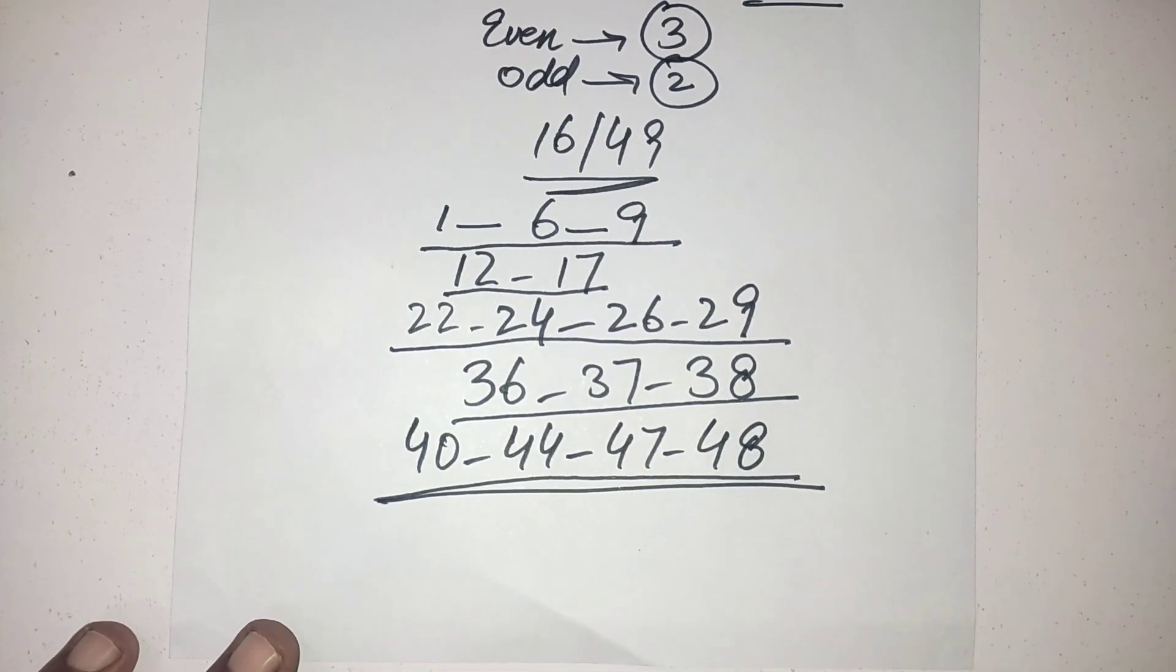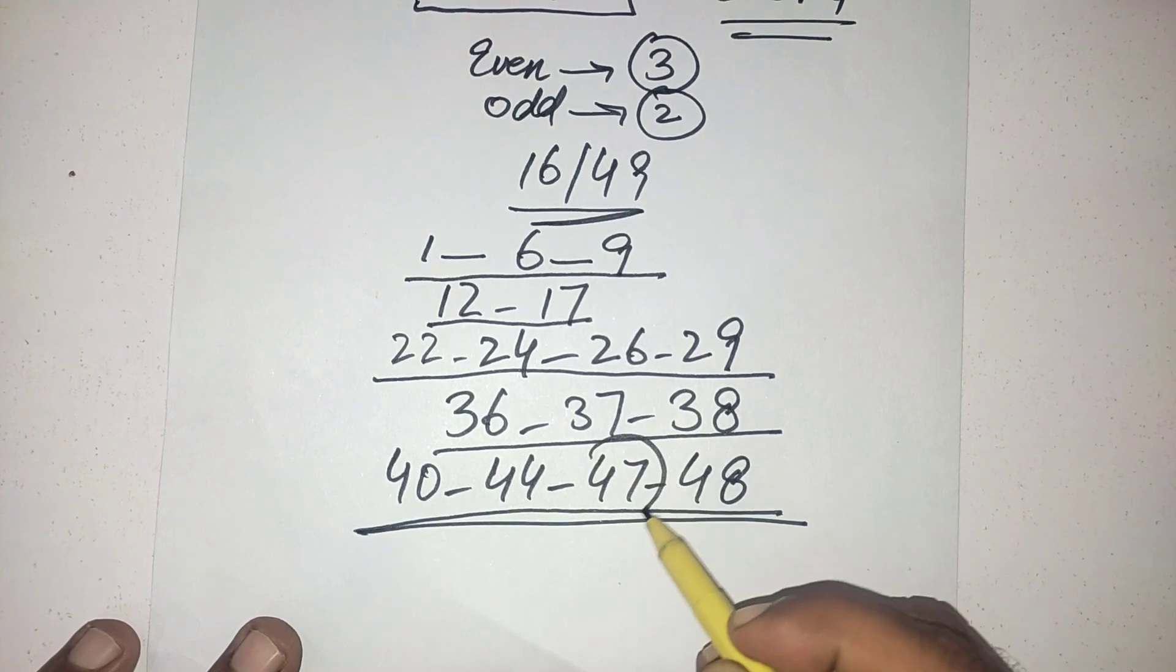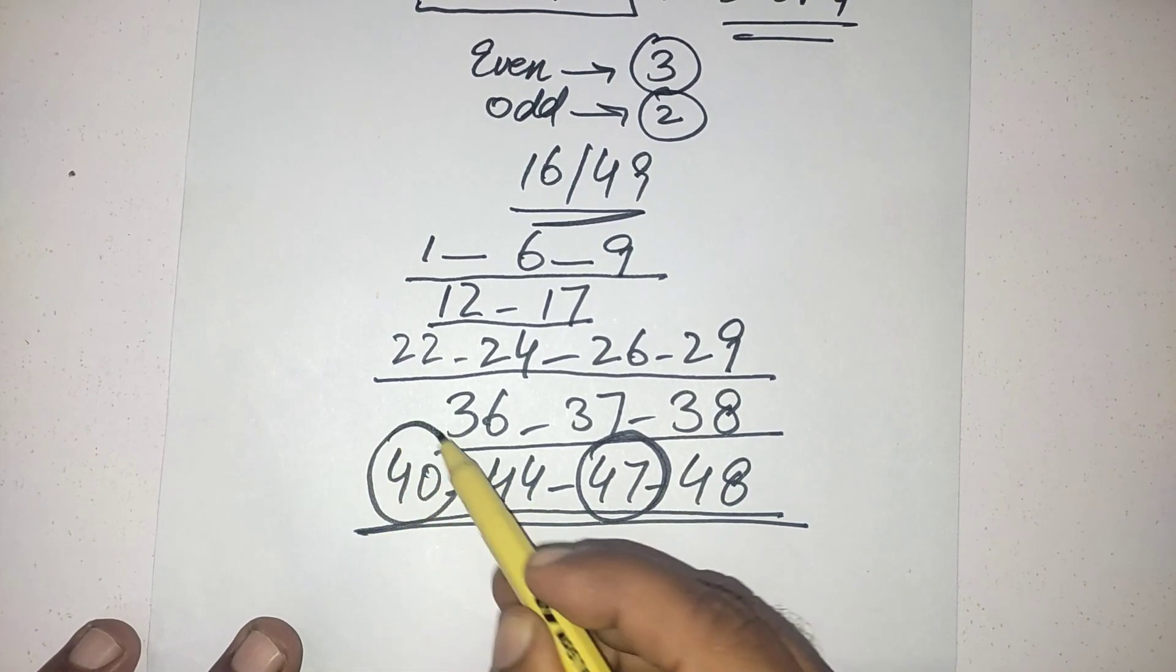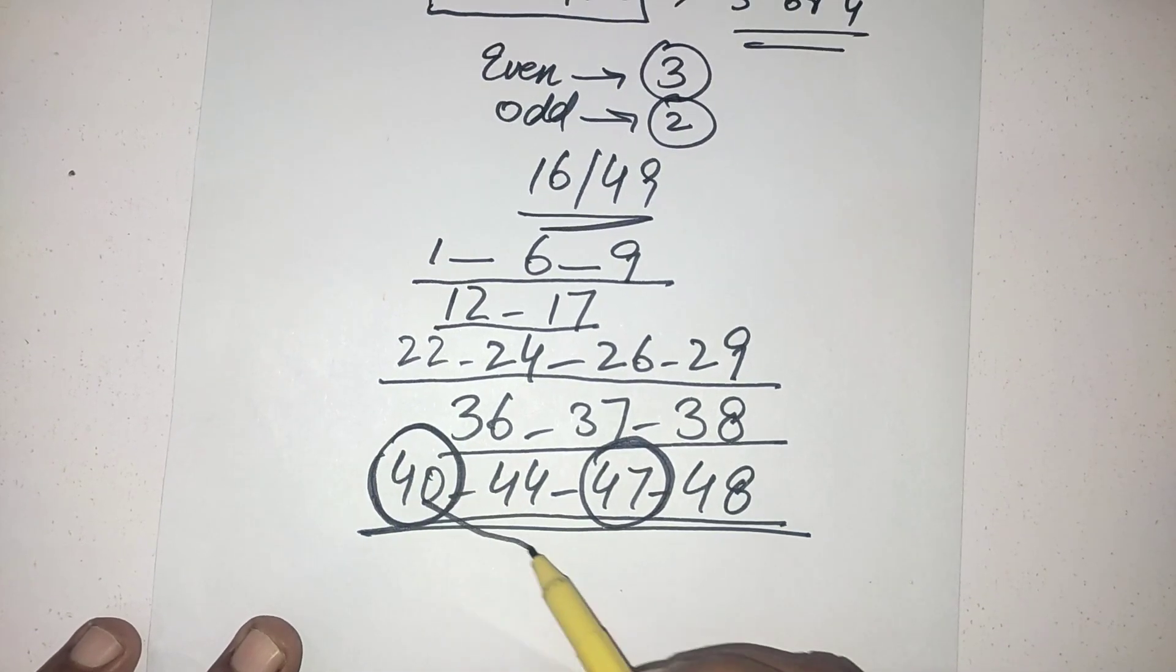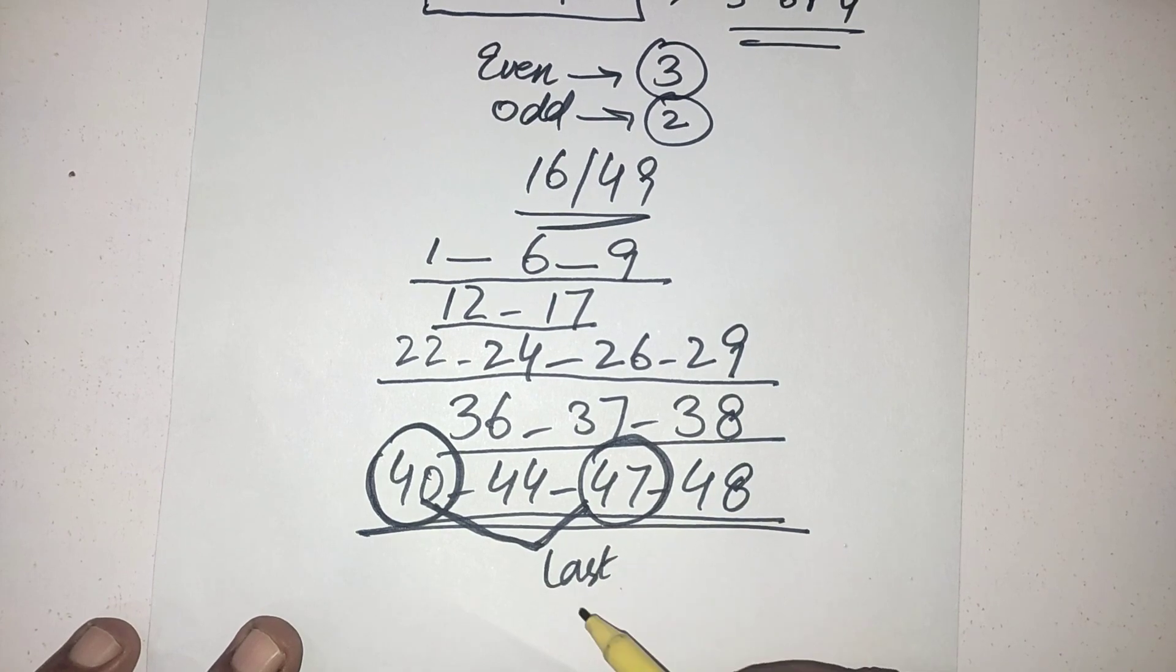And one more thing is most important. The last number of this draw could be 47 or 40. From these two numbers, one number could be the last number of the result.